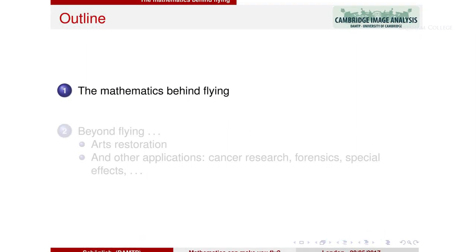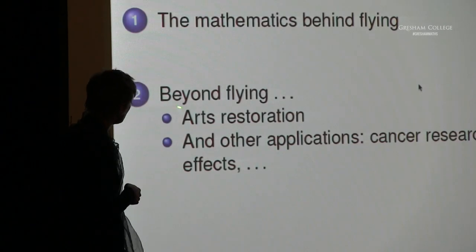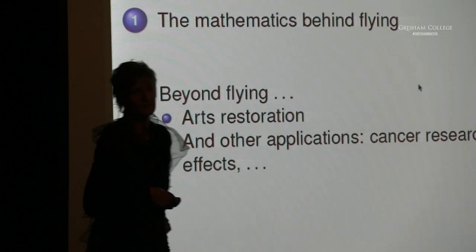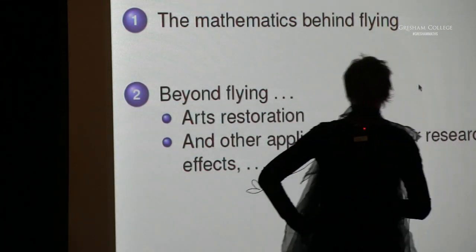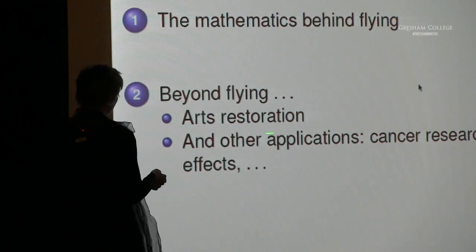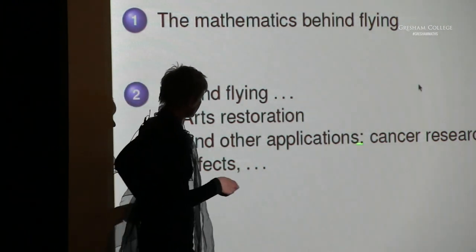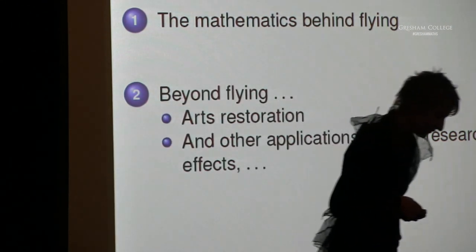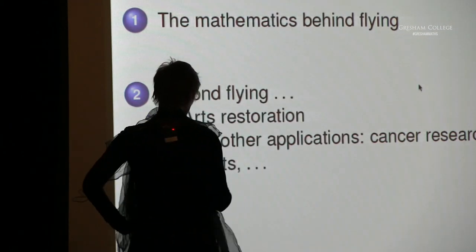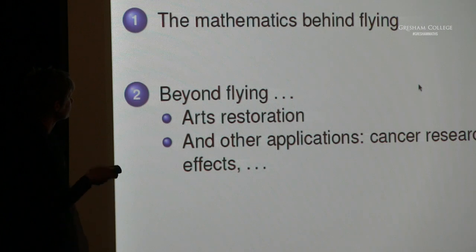The outline of the presentation is as follows. First, I'm going to explain mostly conceptually the mathematics behind flying — behind these different types of image manipulation. Then I'll show you what you can do with this type of mathematics: not just making Joanna fly, but also digitally restoring art pieces like frescoes or illuminated manuscripts. And if we get to that, I'll show some more applications in cancer research, forensics, and some special effects.